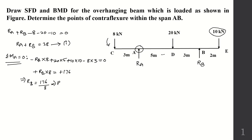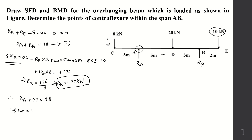From the moment equation, RB = 176/8 = 22 kN. Substituting into equation 1: RA + 22 = 38, so RA = 38 − 22 = 16 kN. So RA = 16 kN and RB = 22 kN.